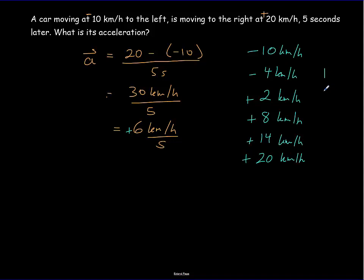It takes five seconds to reach a speed of 20 km/h to the right. So there's a big change in velocity — not a big change in speed, but a big change in velocity because of the reversal of direction.